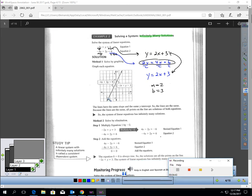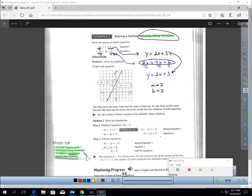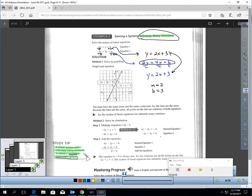When you have one line on top of the other, and obviously that would be infinitely many solutions, the phrase for that is a consistent dependent system is another way of saying infinitely many solutions, a consistent dependent system.